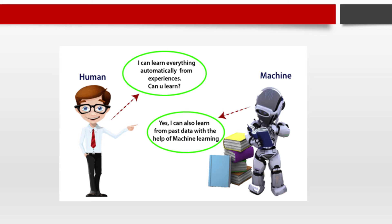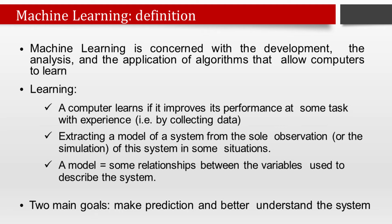In the real world, humans can learn from experiences with their learning capabilities, while computers work on our instructions. But can a machine also learn from experiences or past data like a human does? This is where machine learning comes in. Machine learning is a subset of artificial intelligence mainly concerned with the development of algorithms which allow a computer to learn from data and past experiences on their own. The term machine learning was first introduced by Arthur Samuel in 1959.